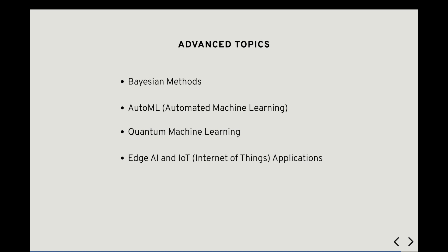AutoML, or Automated Machine Learning, is a rapidly evolving field that aims to automate the process of building, training, and deploying machine learning models.